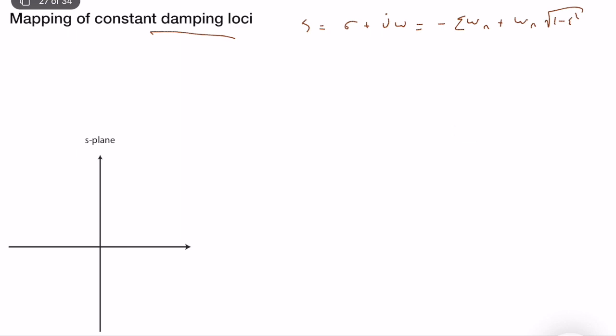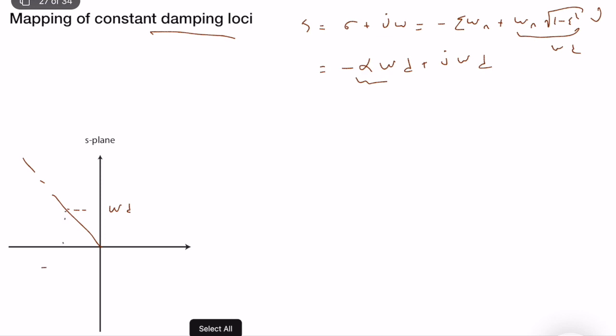Since zeta is constant, it's better to write the pole location in the form minus alpha omega_d plus j omega_d, where omega_d is the damped natural frequency and alpha is related to the damping ratio. Technically, alpha times omega_d gives the real part, and omega_d is changing while zeta remains constant. Depending on the value of alpha, our line will look like a straight line through the origin. This is important for continuous-time control systems because damping is directly related to overshoot and other performance metrics.